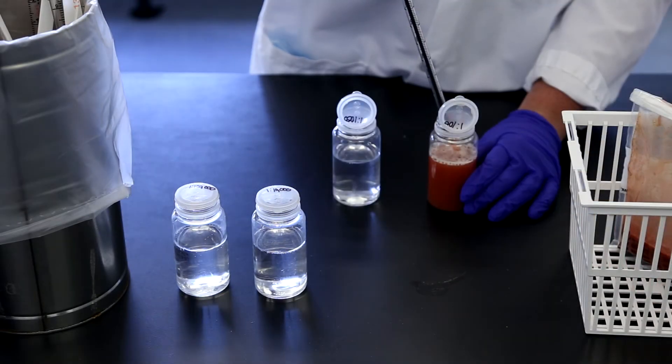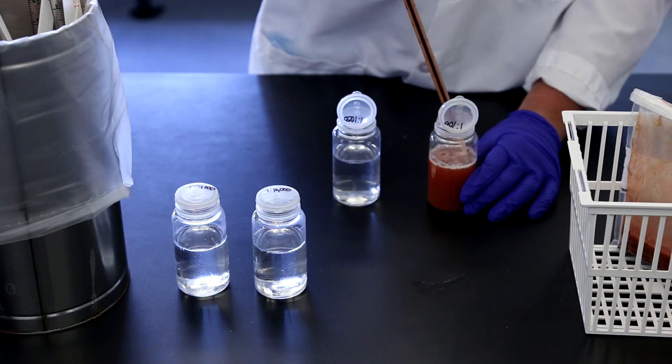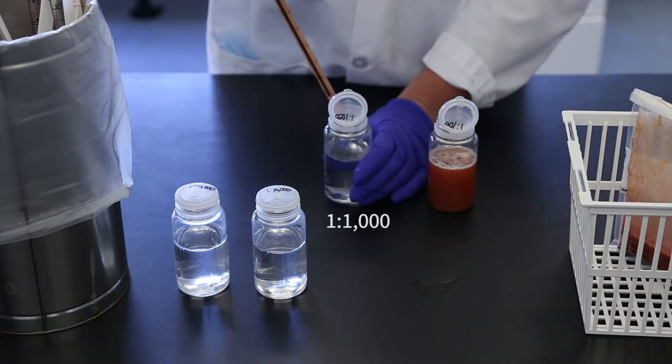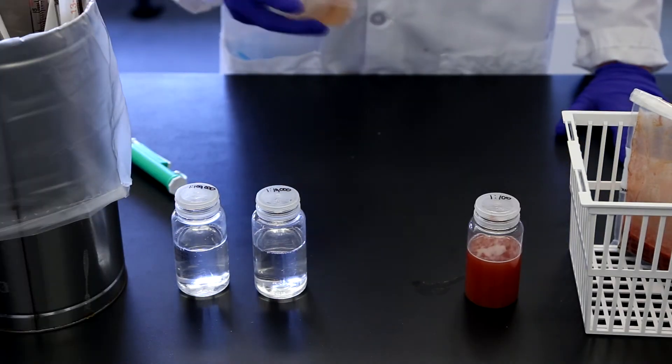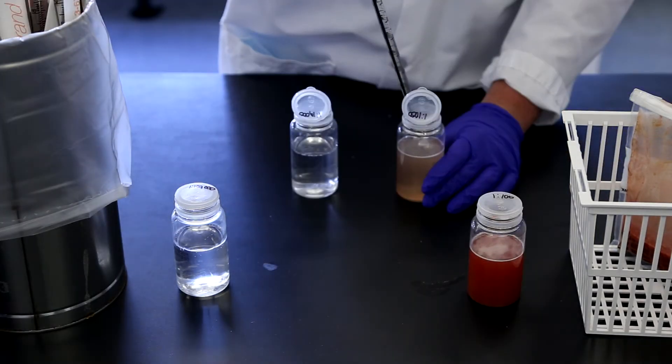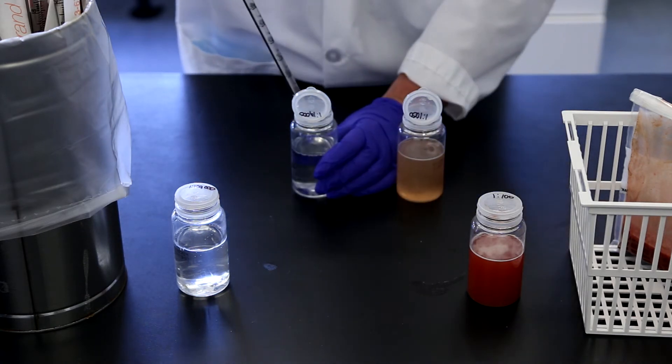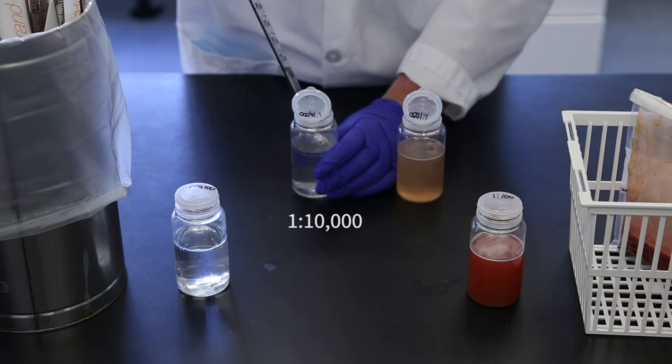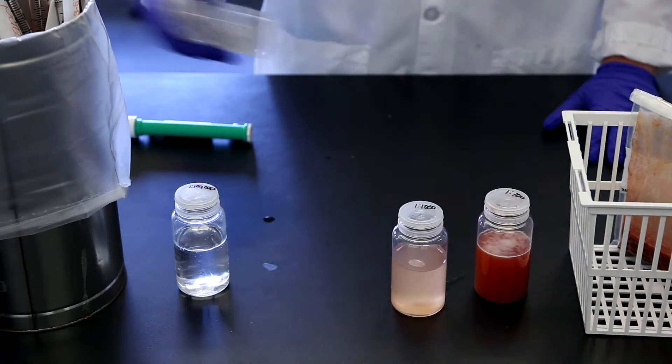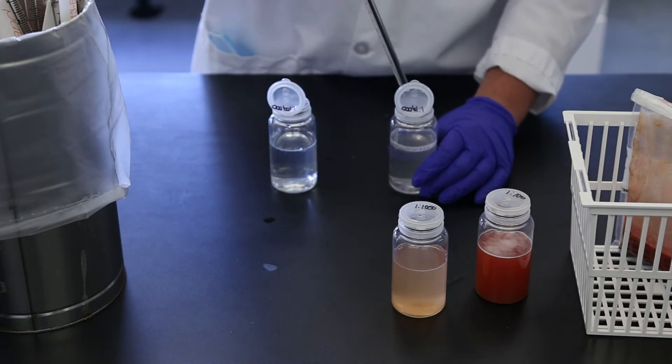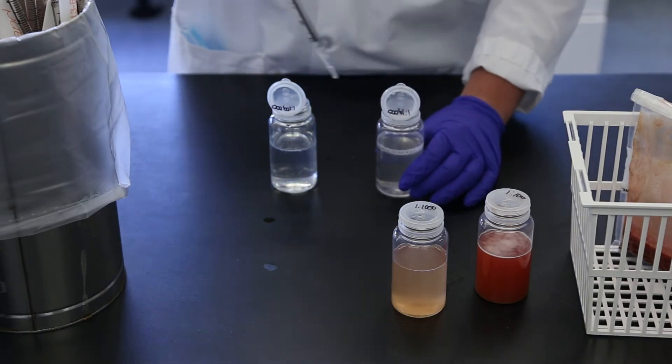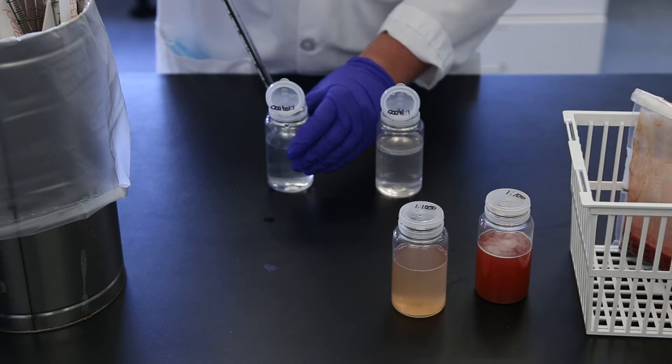For less than 1,000 CFU per gram, transfer 11 milliliters of 1 to 100 sample into 99 milliliters of buffer. For less than 10,000 CFU per gram, transfer 11 milliliters of 1 to 1,000 sample into 99 milliliters of buffer. For less than 100,000 CFU per gram, transfer 11 milliliters of 1 to 10,000 sample into 99 milliliters of buffer.